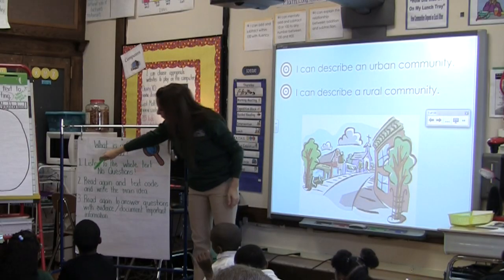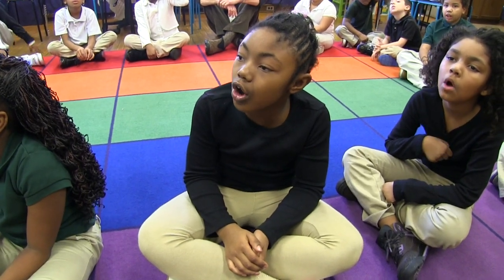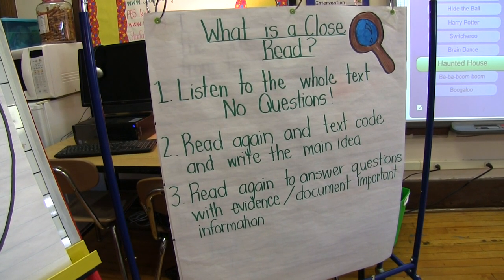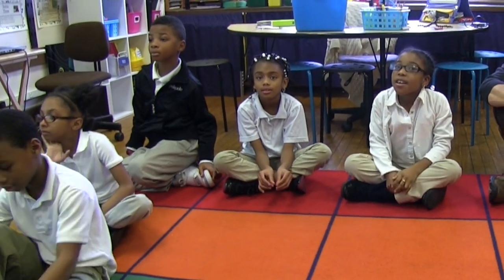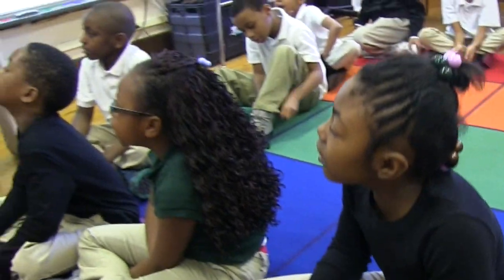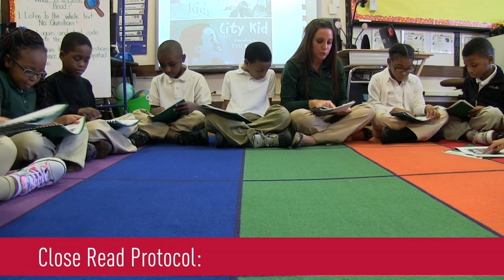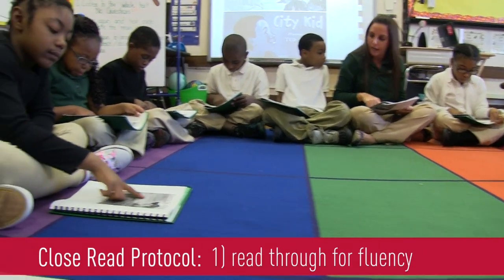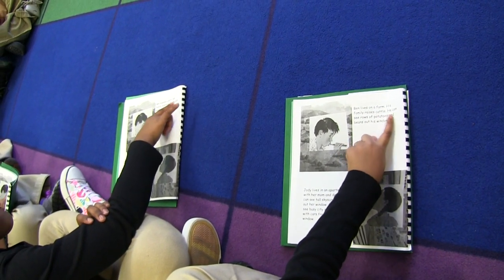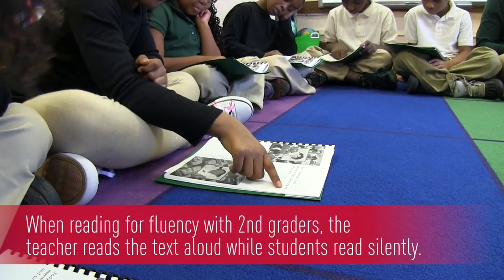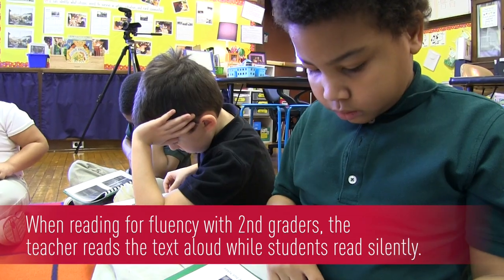Everybody, what's the first step of your close read? Listen to the whole text — no questions. We've been using a close read protocol with our students since the beginning of the school year. The first step is reading the text all the way through for fluency. The way we read for fluency with second graders is through a read-aloud, so all students have an opportunity to read the text and students still developing their reading ability can read along and listen for fluency.